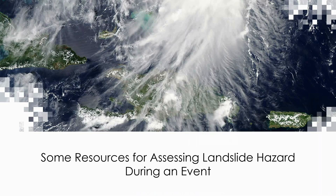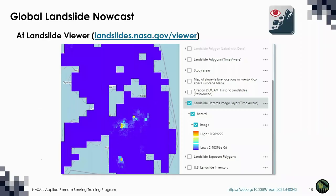Now we'll cover some of the resources that may help you during and after an event. Landslide hazard is the presence of a mass movement that might or might not be dangerous depending on where it is. Landslide exposure is the presence of humans, animals, infrastructure, or other assets that are at the same place and time as the landslide. The Global Landslide Nowcast shows where and when landslides are most probable in nearly real time. It relies on rainfall data from the Global Precipitation Measurement Mission as well as some other factors that contribute to landslide hazard.